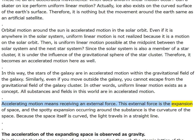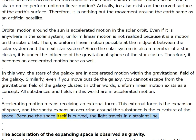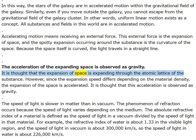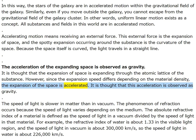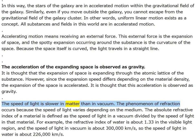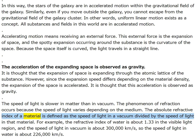Because the space itself is curved, light travels in a straight line. The acceleration of expanding space is observed as gravity — expansion passes through the atomic lattice of substances, but since expansion speed differs depending on material density, the expansion is accelerated, and this acceleration is observed as gravity. The speed of light is slower in matter than in vacuum — refraction occurs because the speed of light varies depending on the medium. The absolute refractive index is the speed of light in vacuum divided by the speed of light in that material. For example, the refractive index of water is about 1.33, so the speed of light in water is about 226,000 km/s.